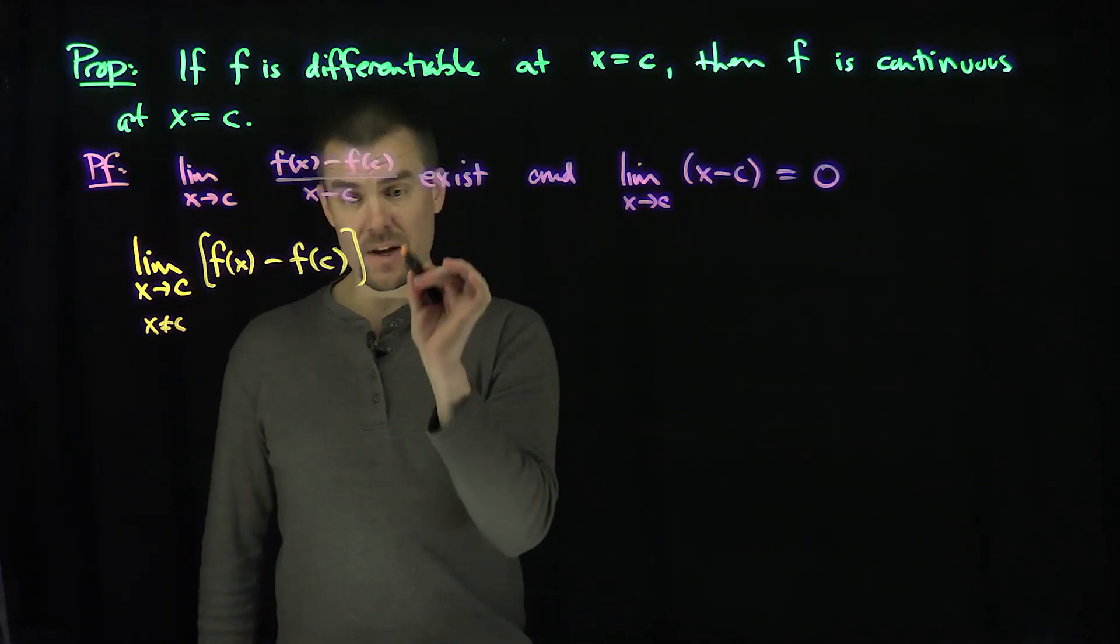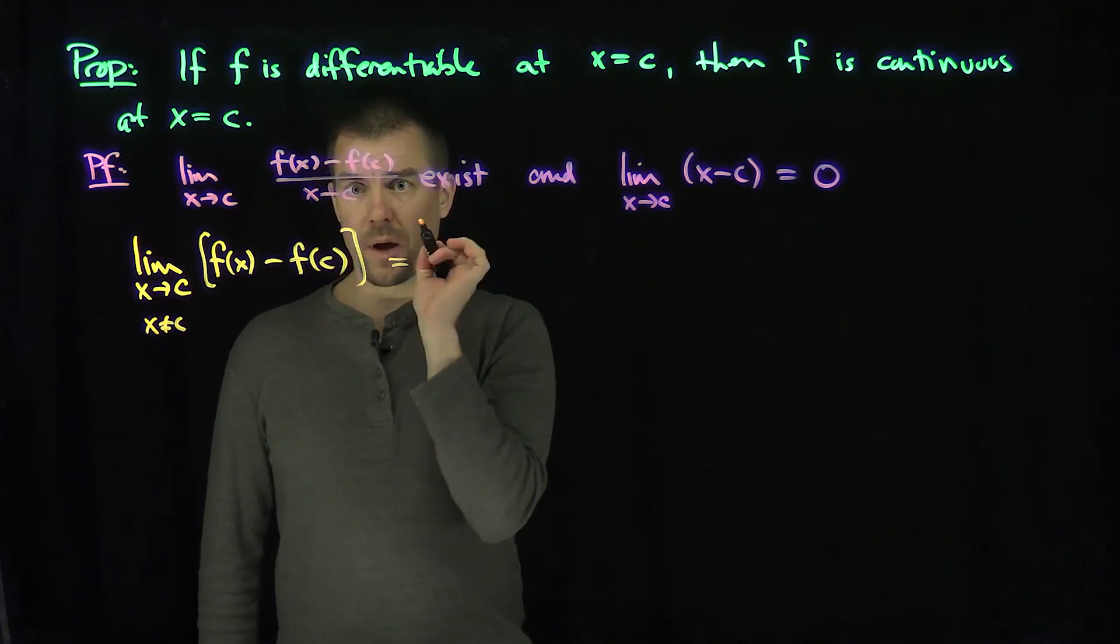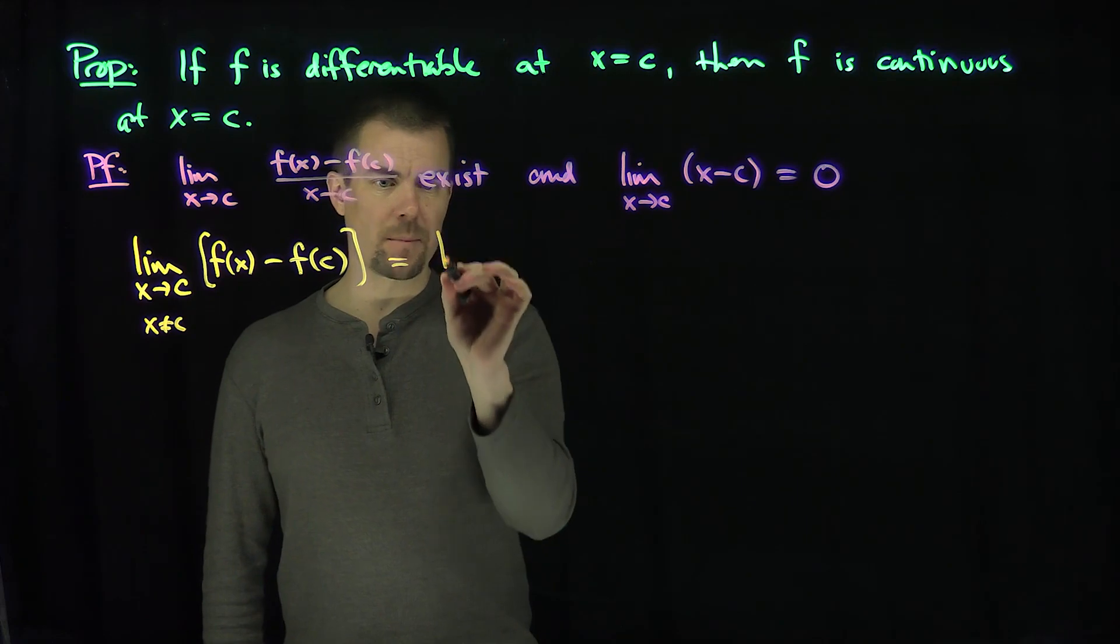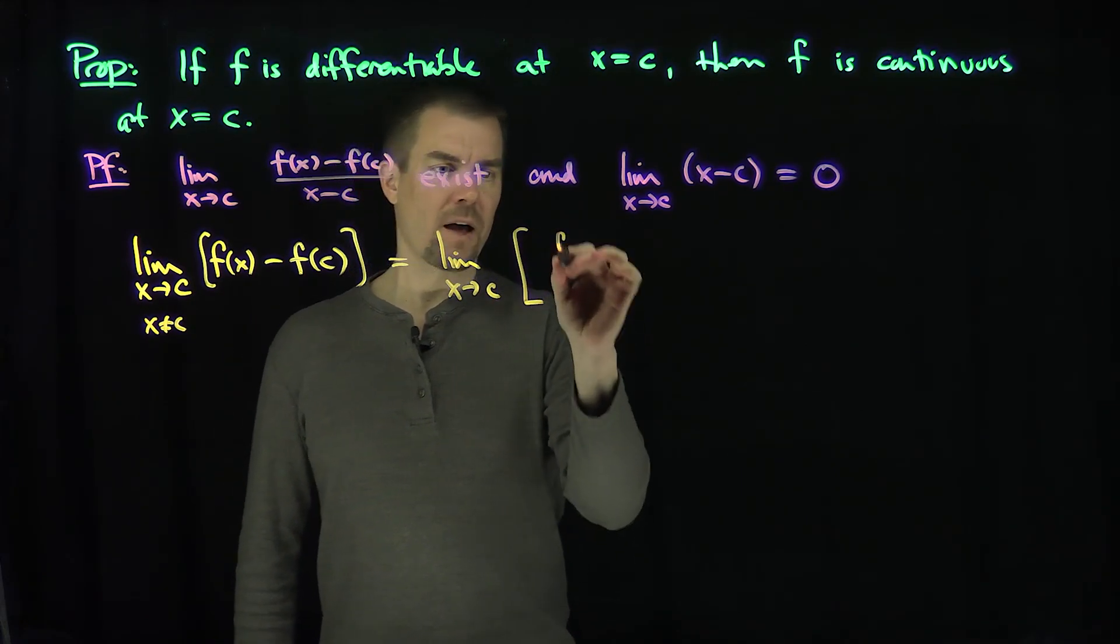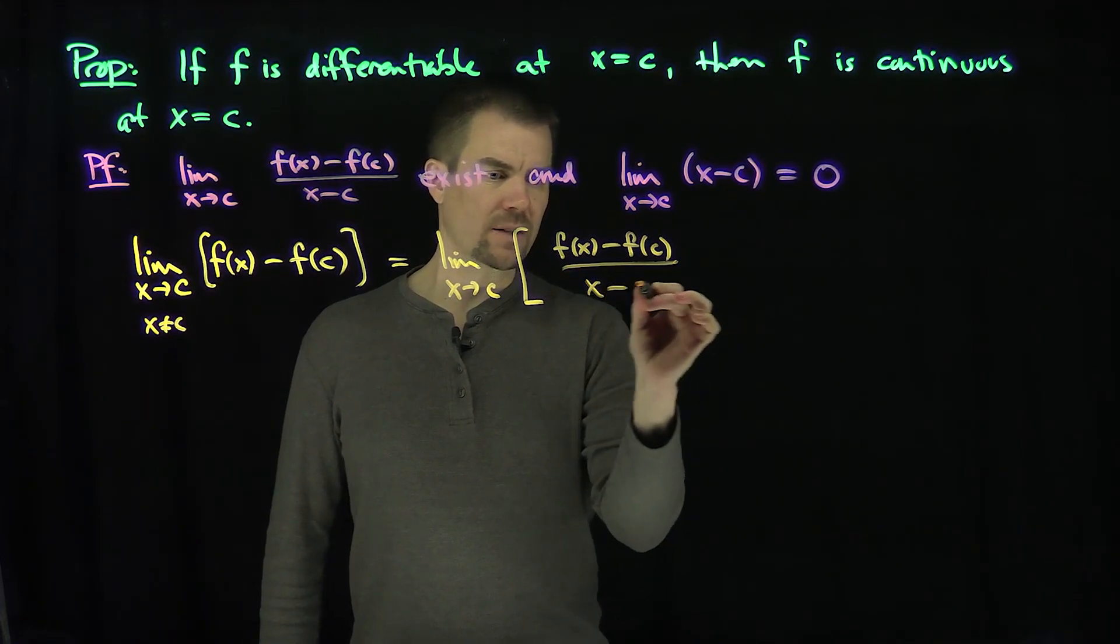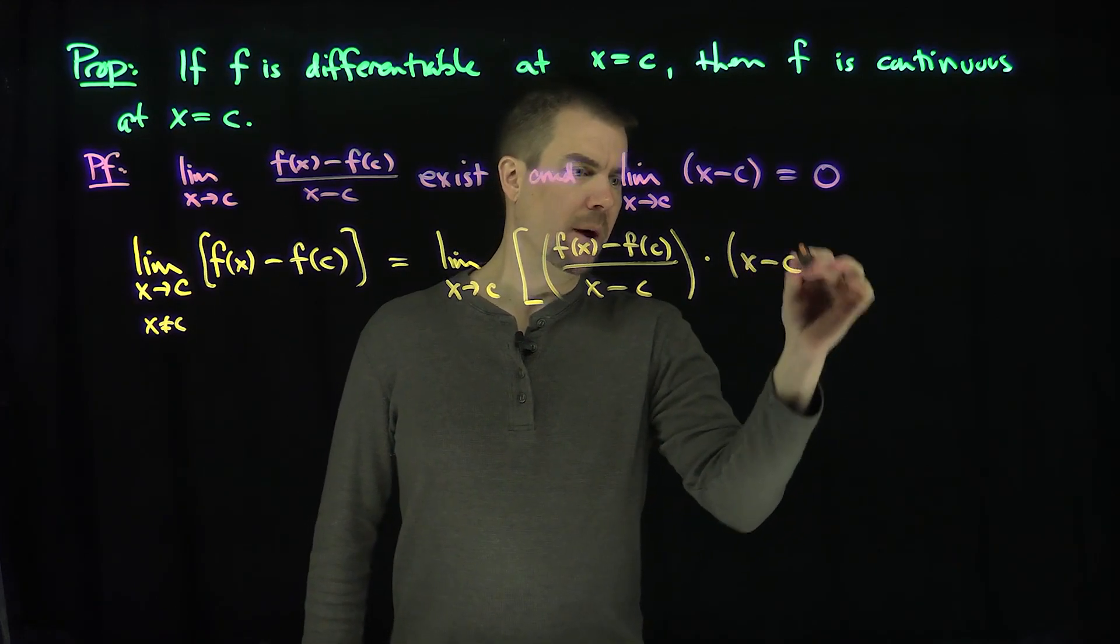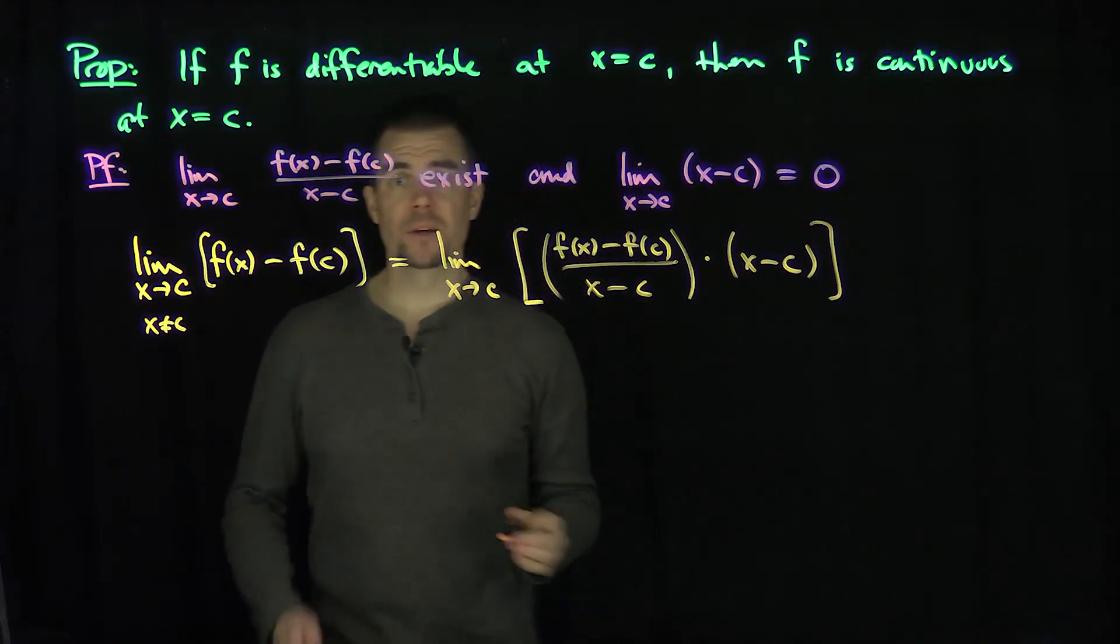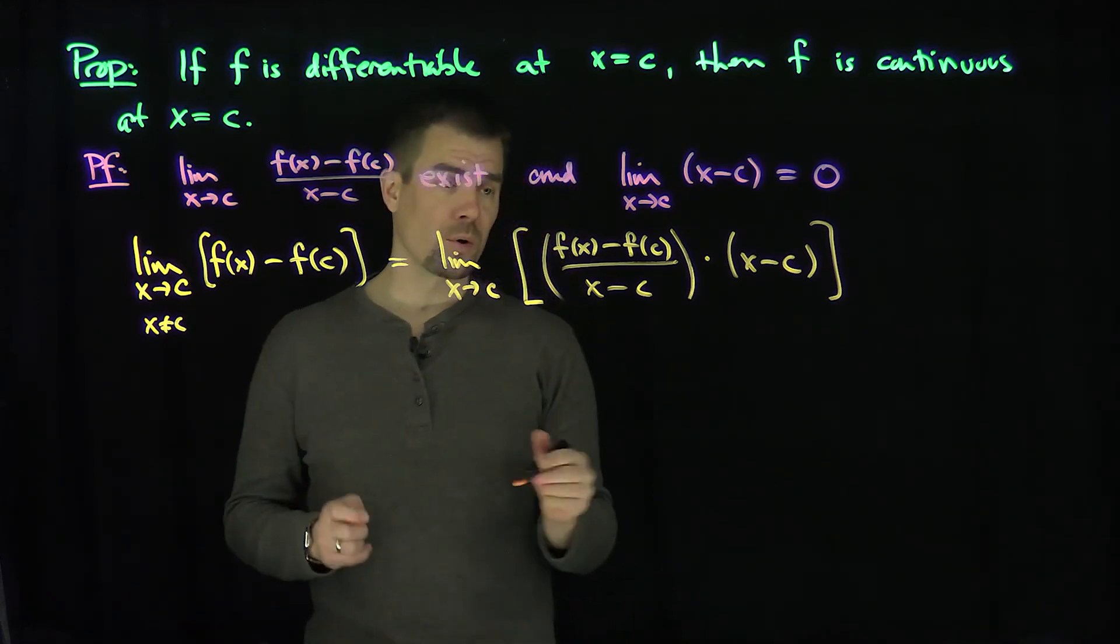So since x is not equal to c, I can, inside this limit, divide and multiply by x minus c. So this is the same thing as the limit as x approaches c of f(x) minus f(c) over x minus c times x minus c. Because I'm multiplying and dividing by something that's not equal to zero, that's algebraically permissible.